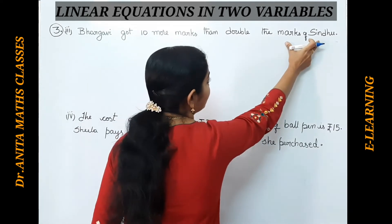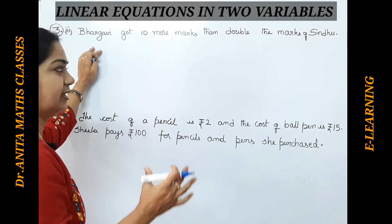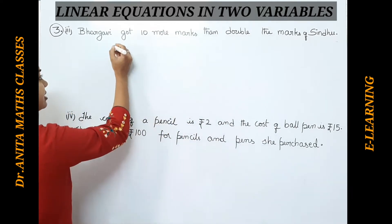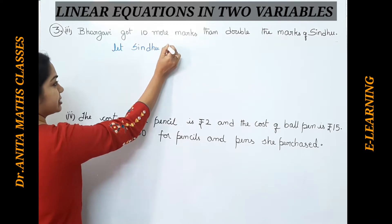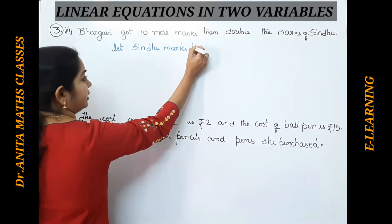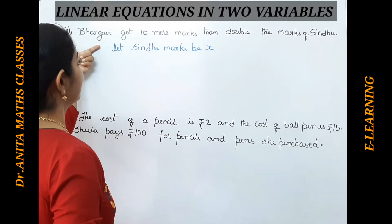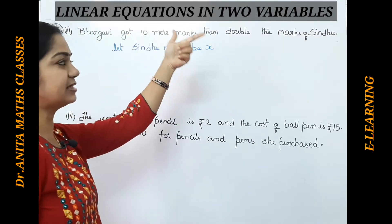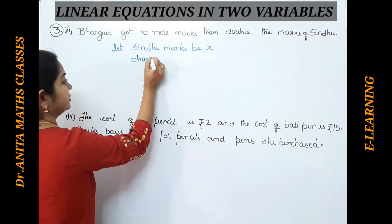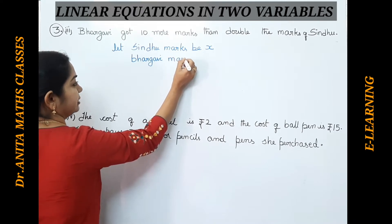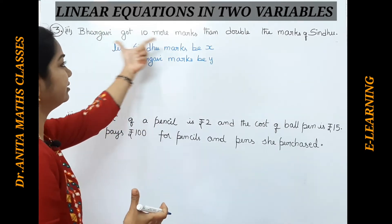If I suppose Sindhu's marks as X and Bhargavi's marks as Y — either way you can suppose — let Sindhu's marks be X, and let Bhargavi's marks be Y. Now with this condition we will express the verbal matter into the linear equation in two variables.